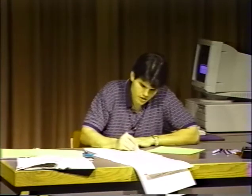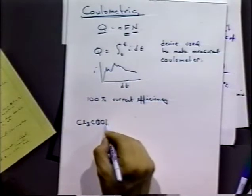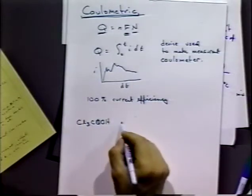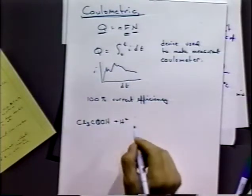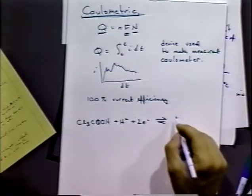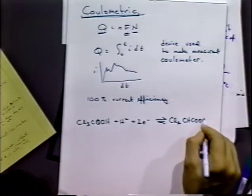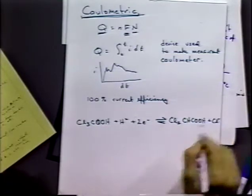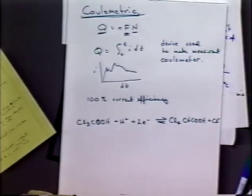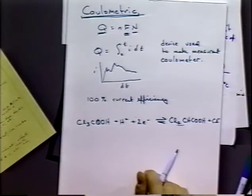This is an example of something we use in our lab sometimes. Trichloroacetic acid in acid solution can be reduced to dichloroacetic acid plus a chloride ion. You can do this reaction even in other forms, the dichloro and the monochloro, which have different reduction potentials.